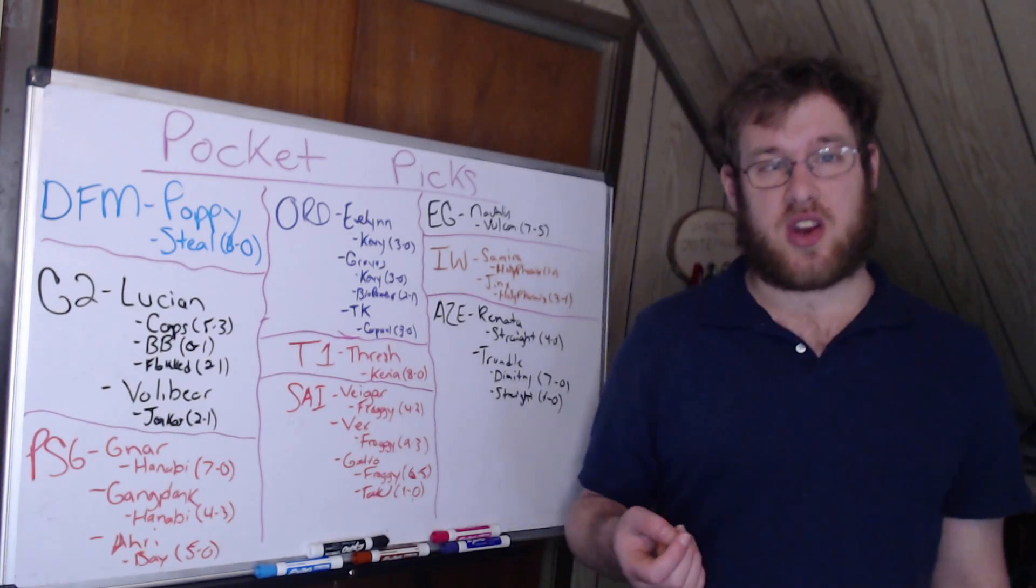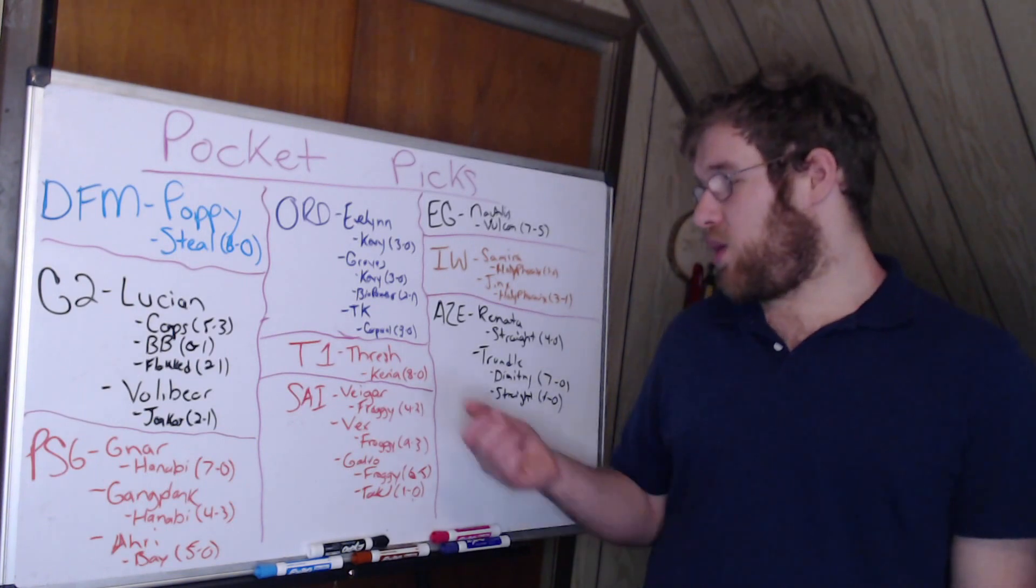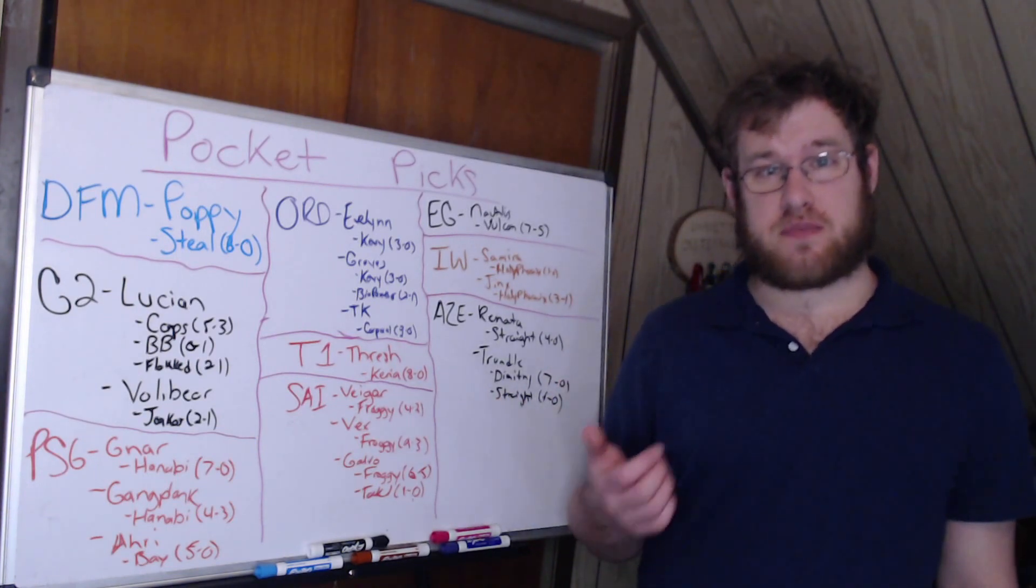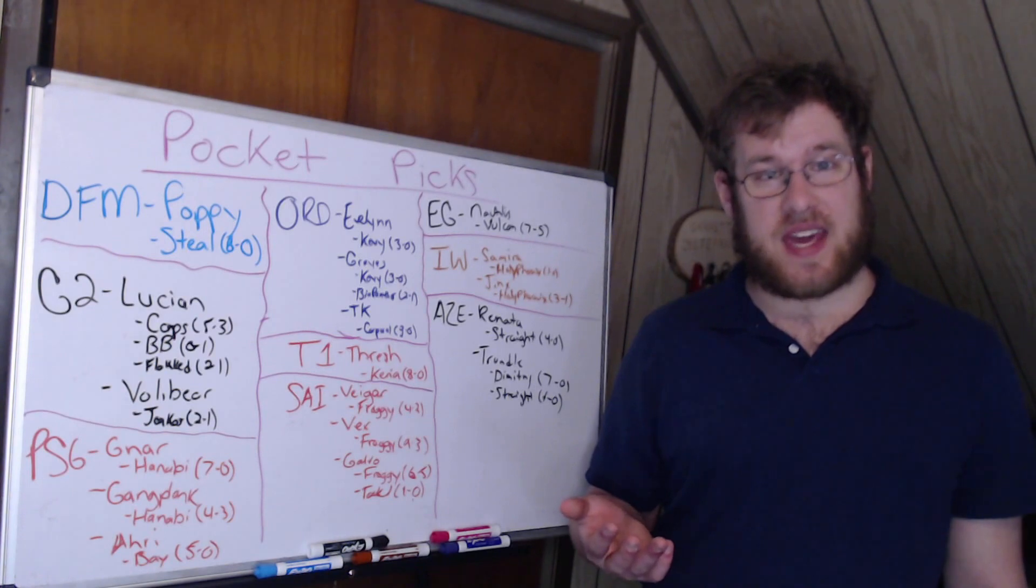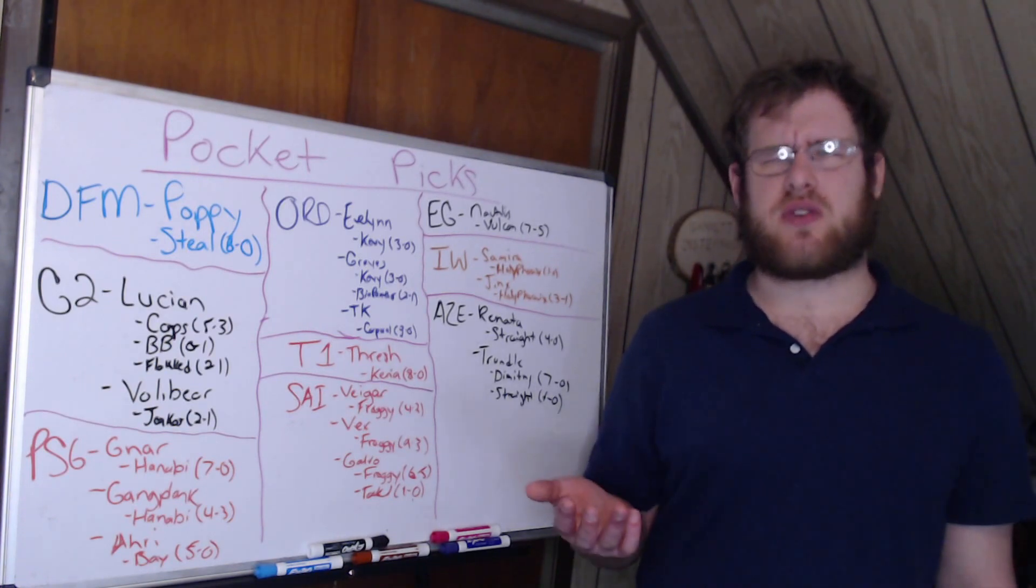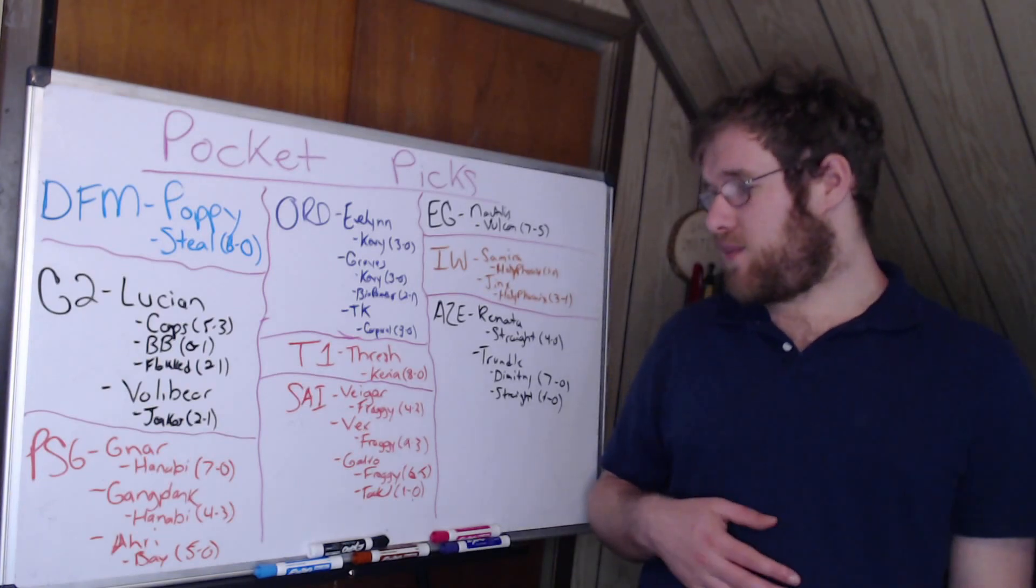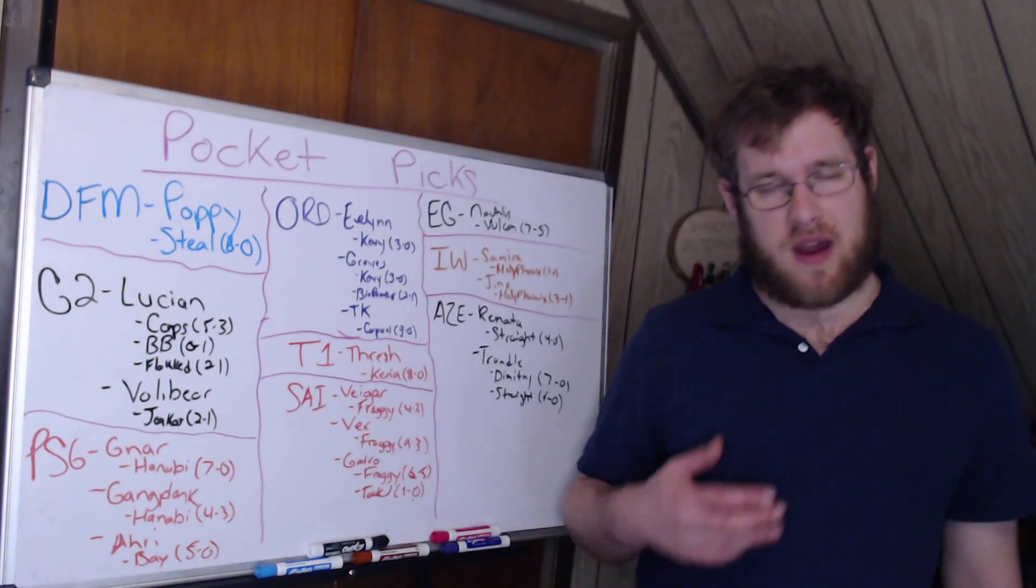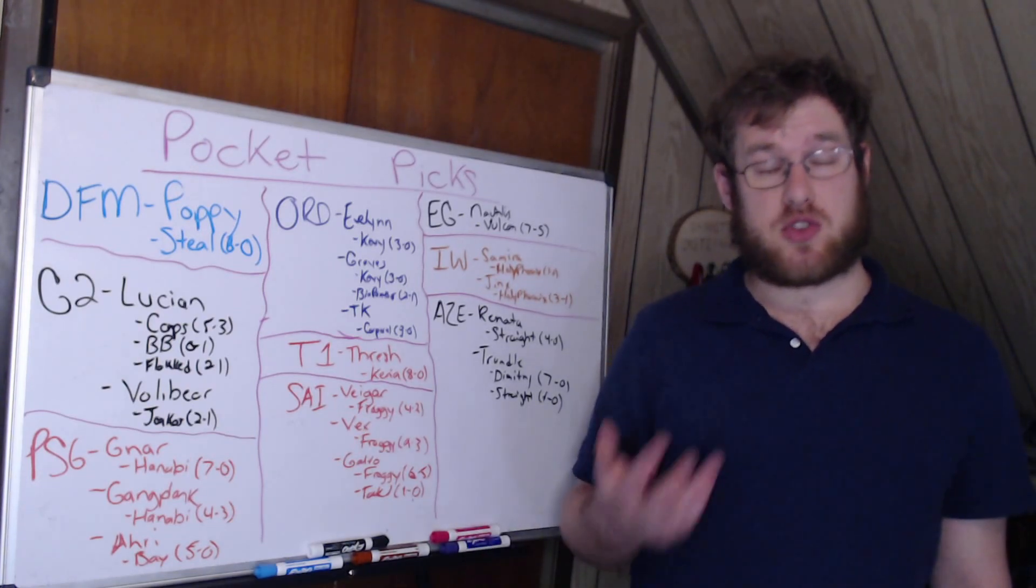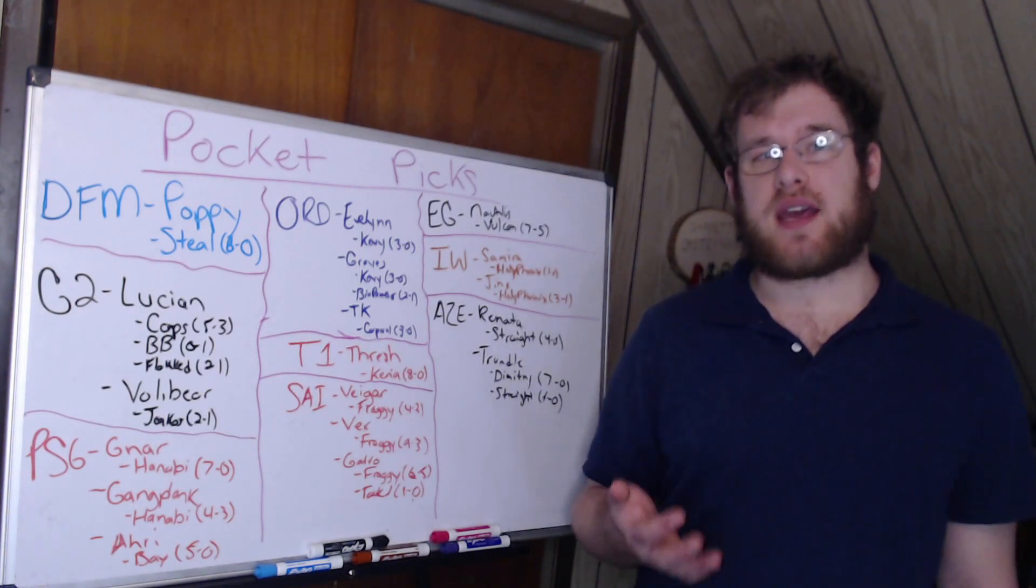Keria is so good. He went 8-0 on Thresh this past split. It was banned highly against him. His Thresh is very good. It was his second most played champion anyways. Very, very good Thresh. Saigon Buffalo: this is where Froggy really—my eyes were open to what Froggy might be able to do for this team.